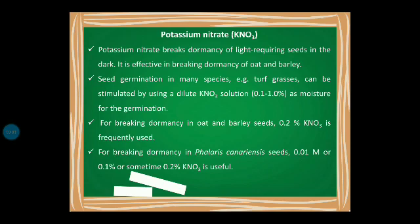As mentioned, 0.2 percent KNO3 is used for oat and barley seeds. For tough grasses it was 0.1 to 1 percent. For phalaris canaryensis — a different species related to phalaris minor — breaking down dormancy requires around 0.01 molal, or 0.1 percent, or sometimes 0.2 percent KNO3.